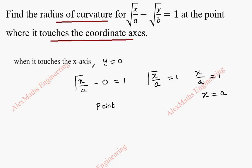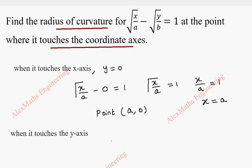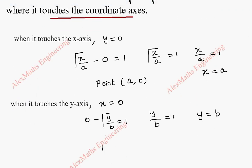So the point where the curve touches the x-axis is (a, 0). In the same way, when it touches the y-axis, the value of x is 0. Substituting 0 in the curve gives minus root of y by b equal to 1. Squaring both sides gives y by b equal to 1, so y equals b. Therefore the point where it touches the y-axis is (0, b).